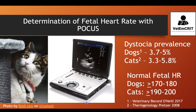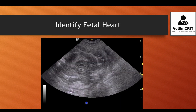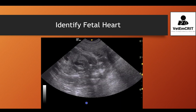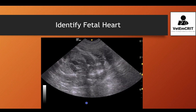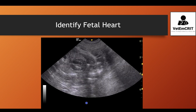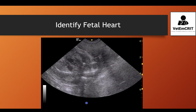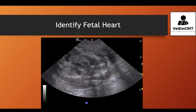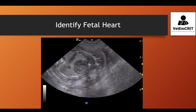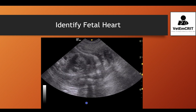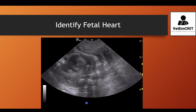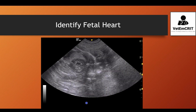The most accurate way to determine the fetal heart rate is to image the fetus with point-of-care ultrasound. One of the biggest challenges veterinarians face is accuracy, because if you're trying to do it subjectively by looking at the beating heart and counting heartbeats per minute, it may be extremely hard to do so if the heart rate is 160, 180, or greater.